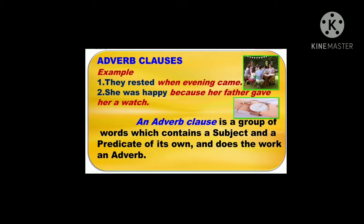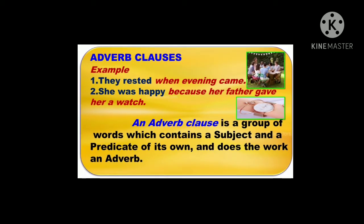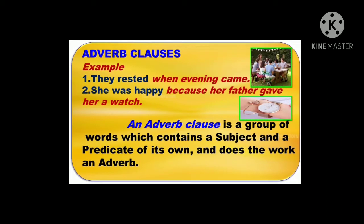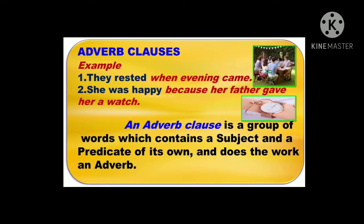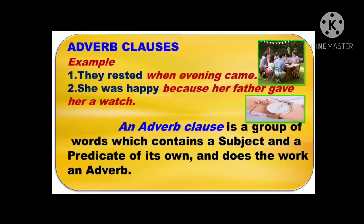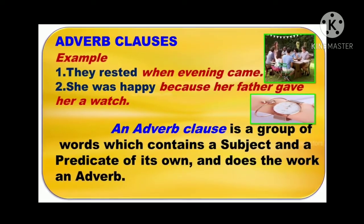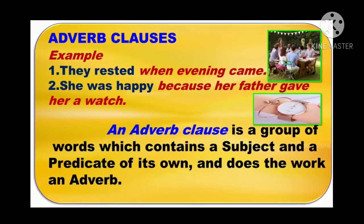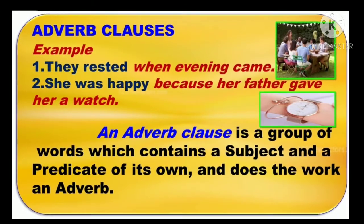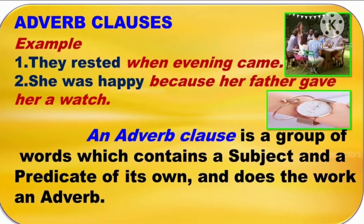The next one is adverb clauses. Look at the examples: 'They rested when evening came.' 'She was happy because her father gave her a watch.' In these two sentences, 'when evening came' and 'because her father gave her a watch' are adverb clauses, because they do the work of an adverb. An adverb clause describes or gives more information about the verb. It tells us when, where, how, to what extent or under what condition something is happening.